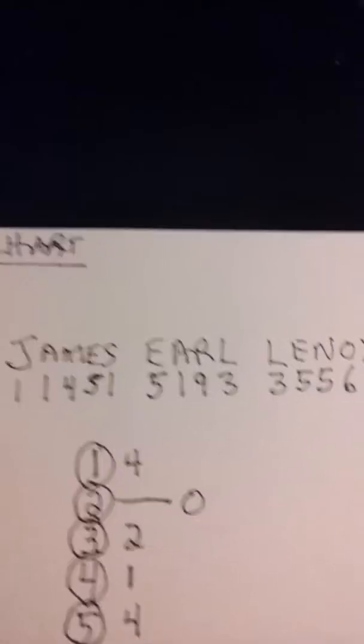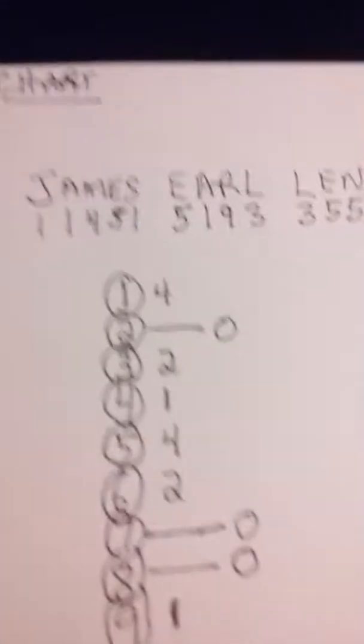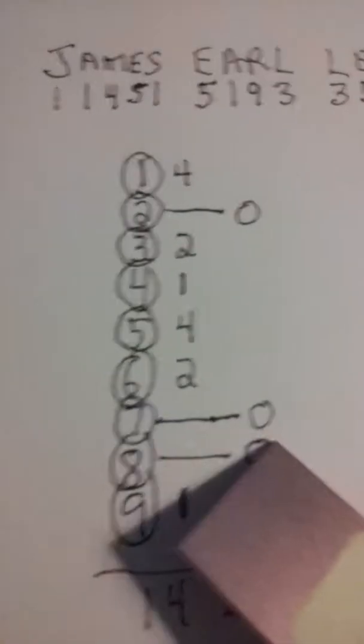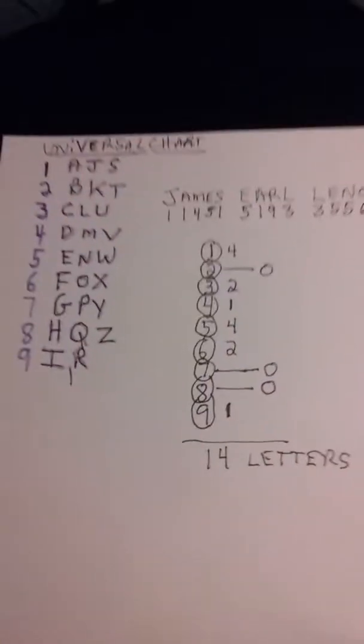Then we look at the 8th letter. No HQs or Zs. So we again put 0 next to the 8 right here. And it has one R, which is the 9th letter. So now, what does it all mean?